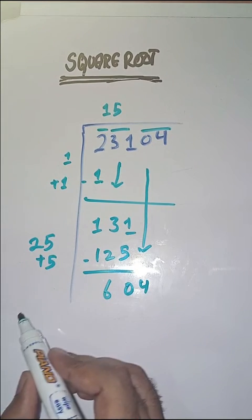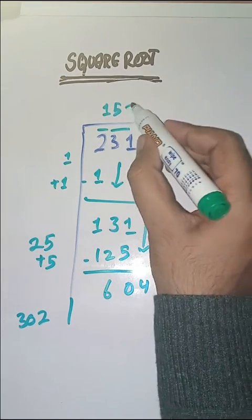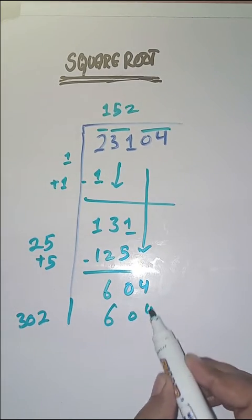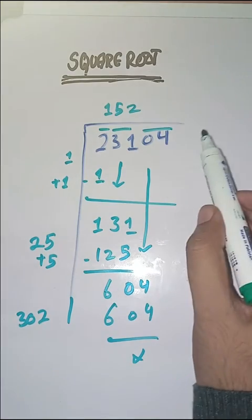Now we do 25 plus 5 which is equal to 30. Now we will take a number 2. 302 times 2 is 604. So it completely solved. So square root of 23104